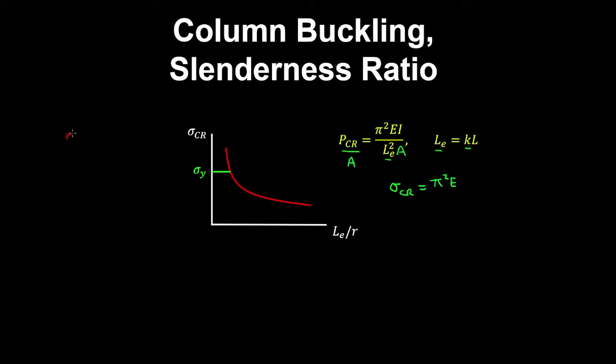And recall that the radius of gyration of a section was defined as the square root of the second moment of area divided by the cross sectional area. So therefore I over A is r squared, and that's divided by the square of the effective length.